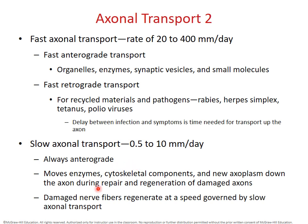Damaged nerve fibers can regenerate and repair themselves, but they do so fairly slowly because of the use of slow axonal transport in the anterograde direction. If you damage a nerve fiber, which is the axon, that doesn't necessarily destroy the neuron. Neurons are amitotic and don't replace themselves, but axons can regenerate and regrow if they've been cut. As long as the cell body remains alive, there is the potential for the axon to regrow back to its original site of innervation. We'll return to that idea when we get to the myelin sheath.